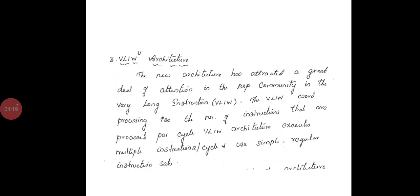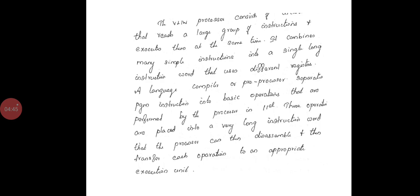Now we can see about the VLIW architecture that is the third one. The new architecture has attracted a great deal of attention in the DSP community by using the very long instruction word processing. It increases the number of instructions that are processed per cycle. VLIW architecture executes multiple instructions per cycle and uses simple regular instruction sets.